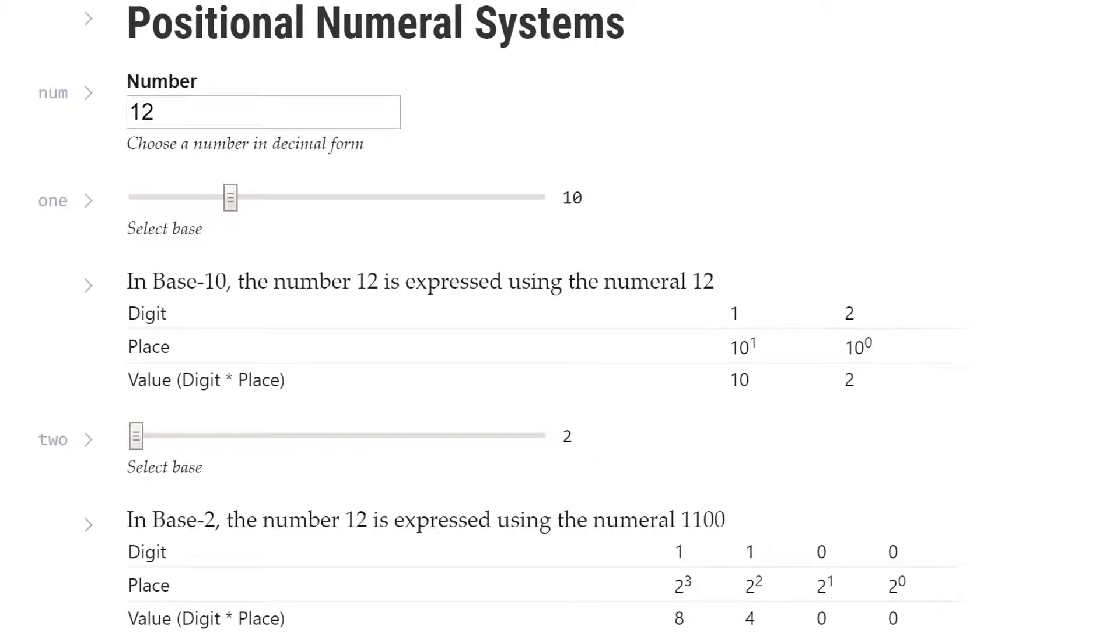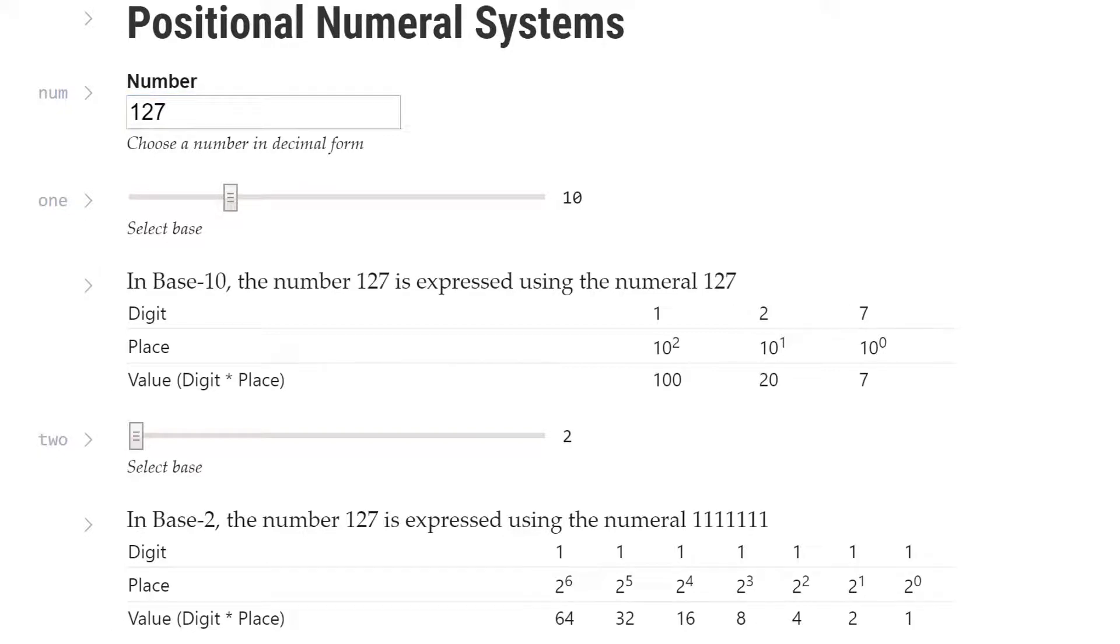Let me show you what I mean with a larger number. We'll go with 127. In base 10, the number 127 is expressed using the numeral 1, 2, 7. This numeral represents the number 127 because the values add up to 127. We have one 100, two tens, and seven ones.